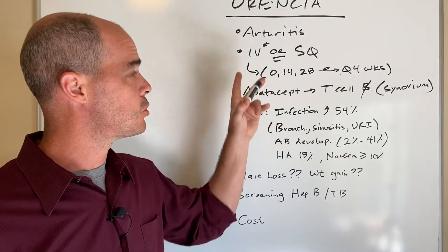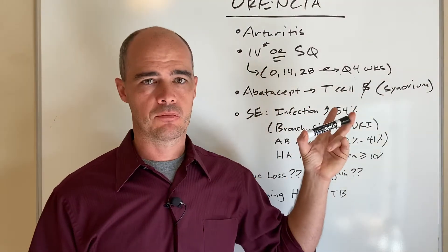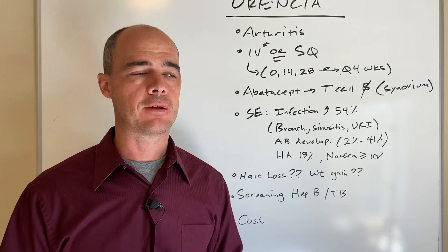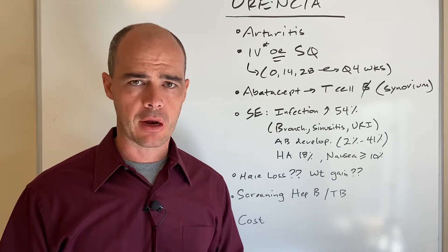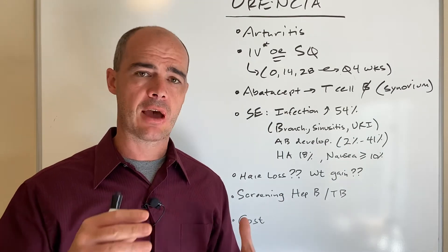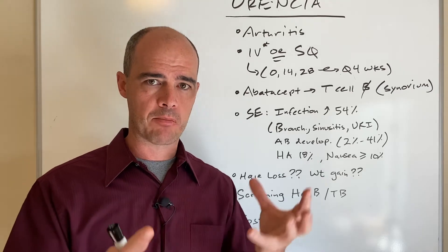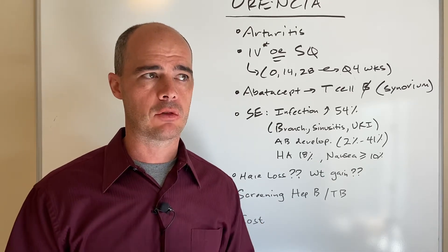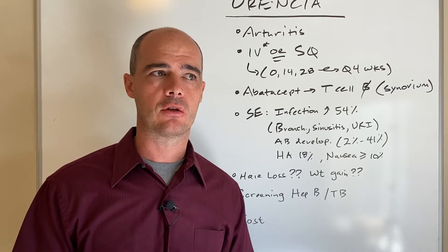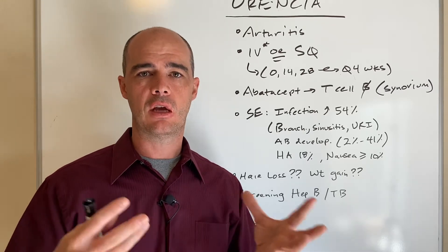So what abatacept or Orentia does is it blocks T cells. What they found in folks with arthritis is that when they look at the synovium, which is the membranes and some of the fluid that surround the joint, they can find T cells in there and those T cells are involved in inflammation.